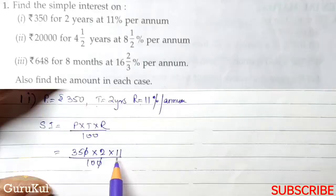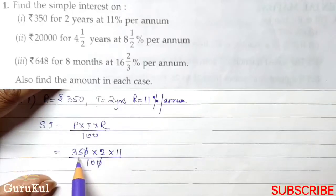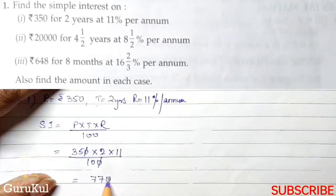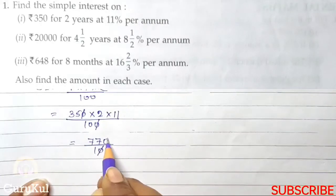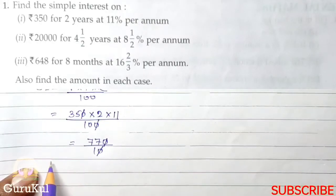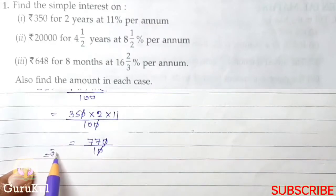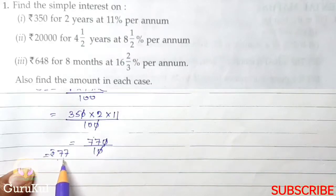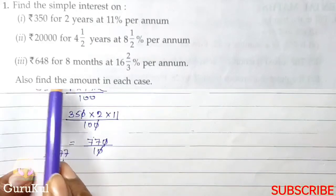0 and 0 got cancelled, 2 11s is 22, 22 into 35 is equal to 770 by 10. Now 0 got cancelled, so our amount is rupees 77. This is interest, the simple interest which we have calculated on the principle.